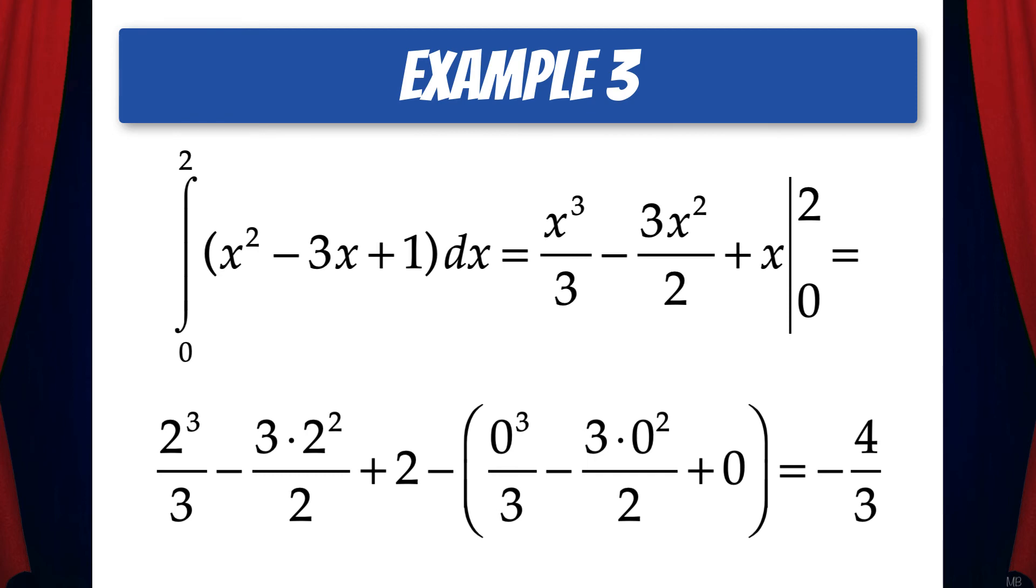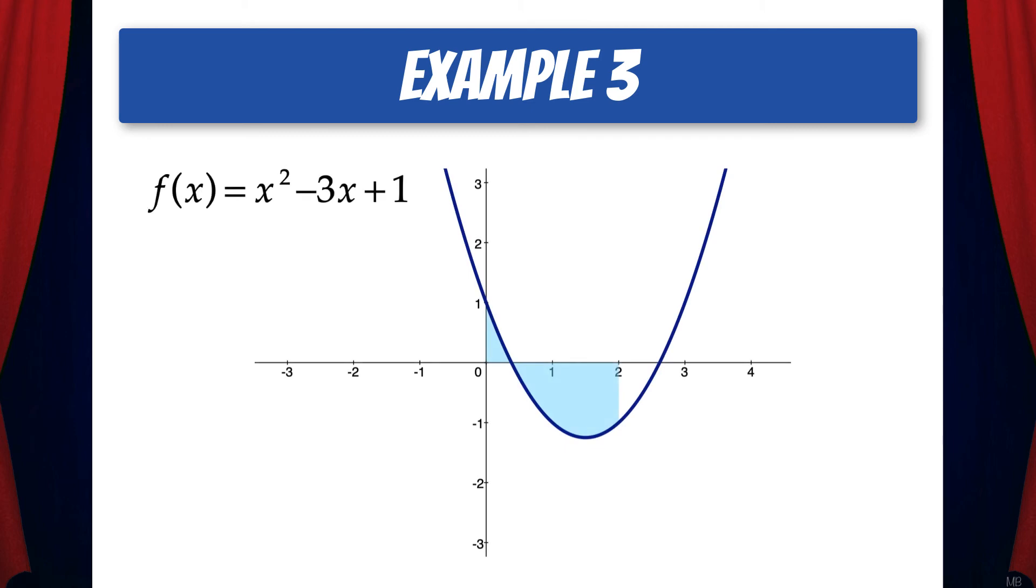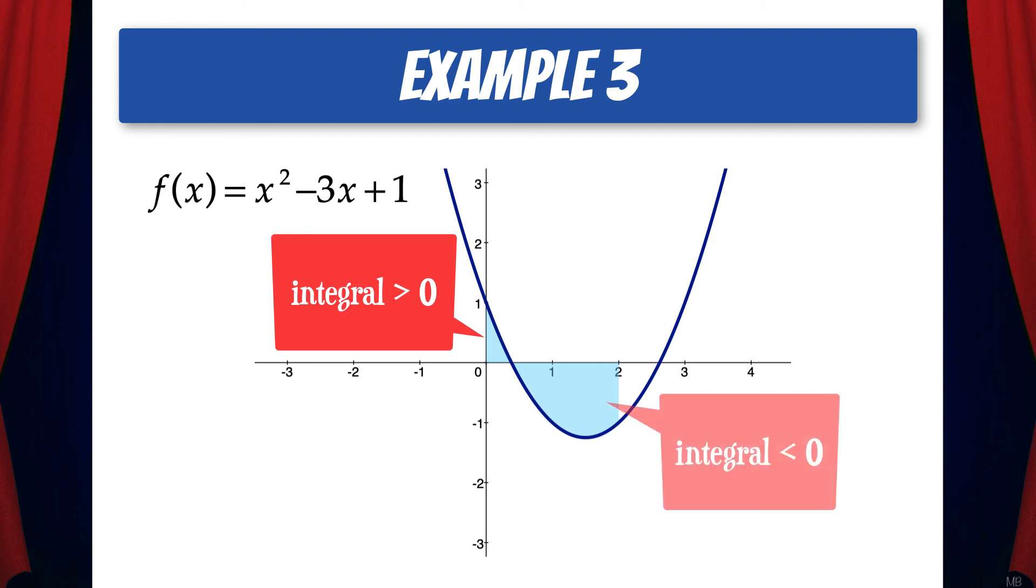Now you might be wondering how can the answer possibly be negative? So let's take a look at a graph of x squared minus 3x plus 1. So as we integrate from 0 to 2, the shaded region above the x-axis is considered positive, and the shaded region below the x-axis is considered negative. And since there's more shading in the negative region, the final answer will be negative.